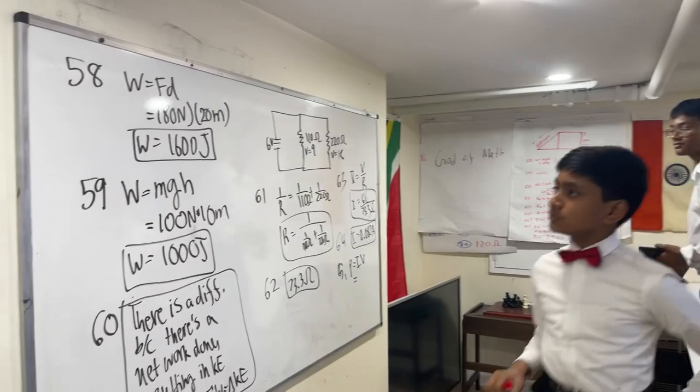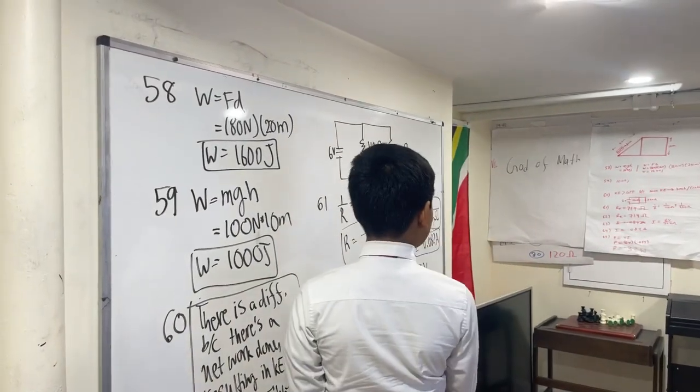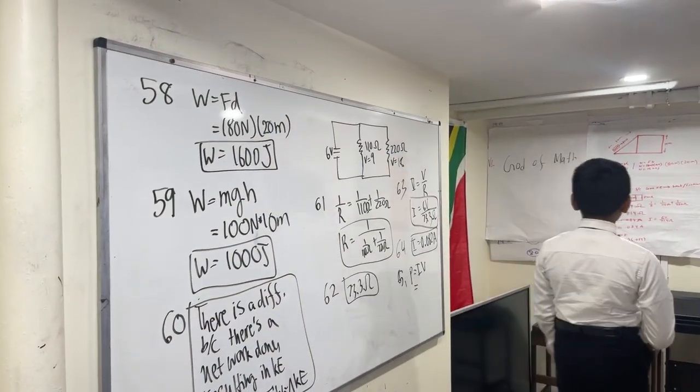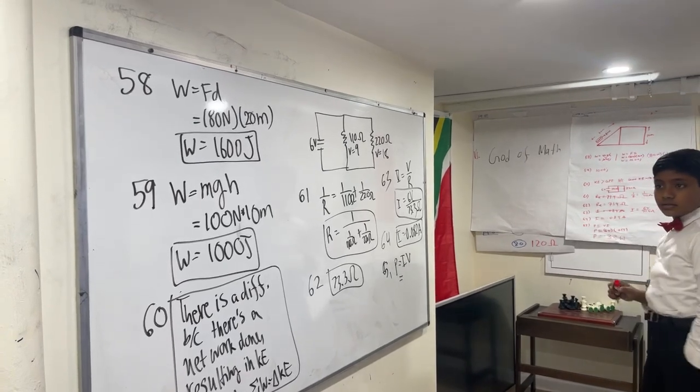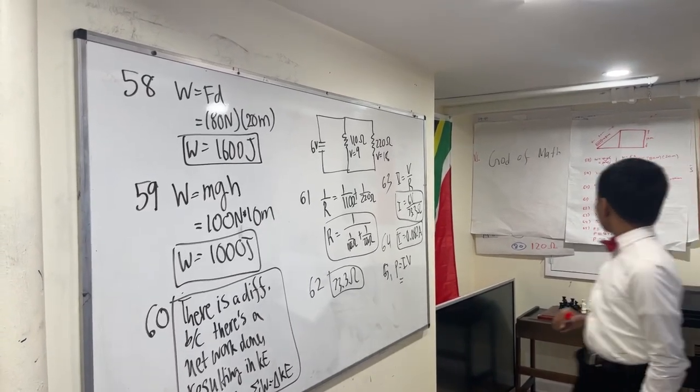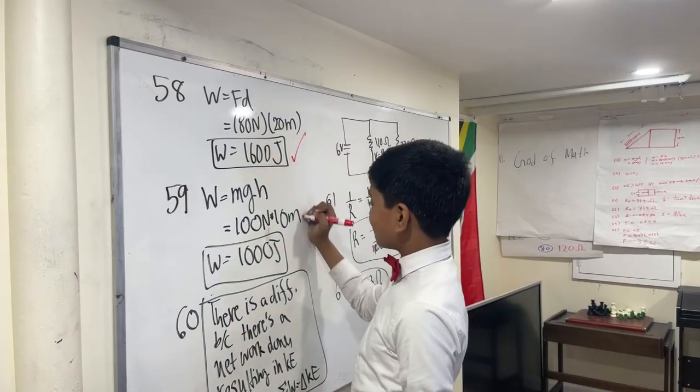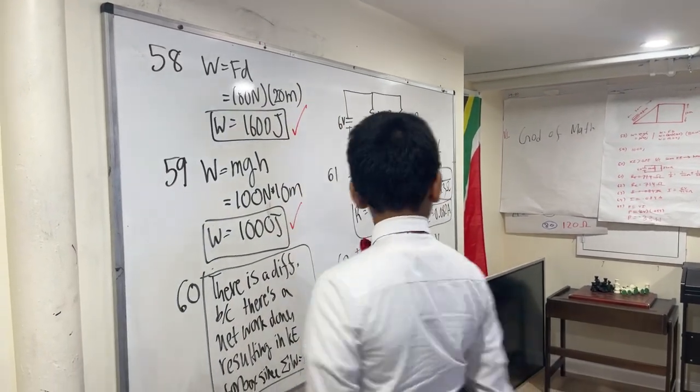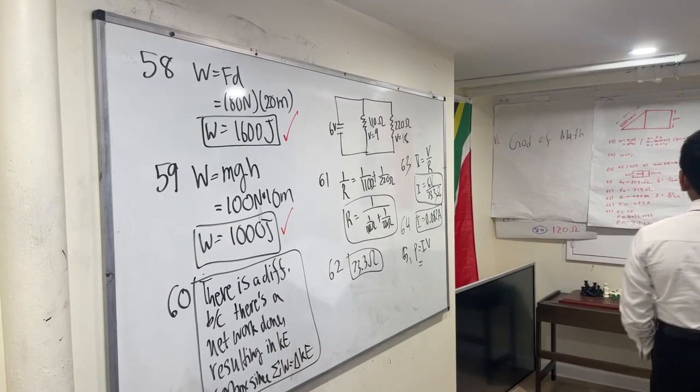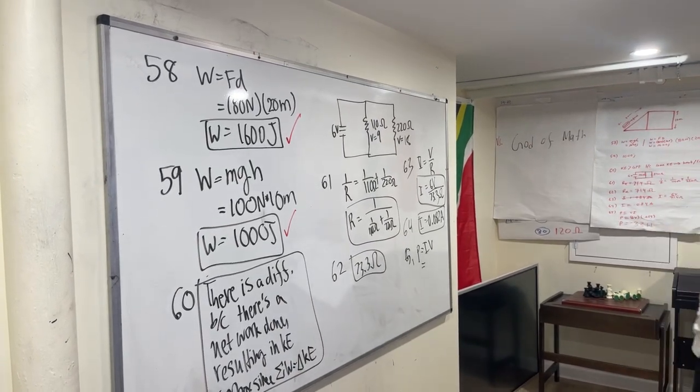80 newtons times 20 meter is 1600 joules. This time I remember. Wait. Oh, okay. I'm rocket time. Let's wait. That looks correct. Okay, now it's from the cage.